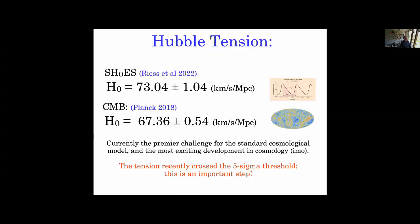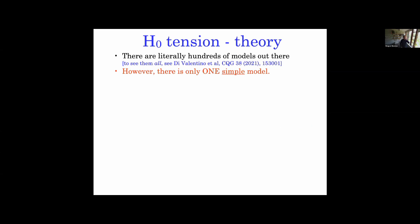Another really exciting thing has been the Hubble tension — much discussed in these Cosmoverse talks — between local measurements that give a higher value of H0 and global measurements that agree on roughly 67–68 km/s/Mpc. This has recently passed the five-sigma threshold. In my opinion it's pretty much the most exciting thing in cosmology because it may indicate new physics. There are many models attempting to explain the Hubble tension; if you'd like to see all of them in one place, check out a paper led by Eleonora from a few years ago.